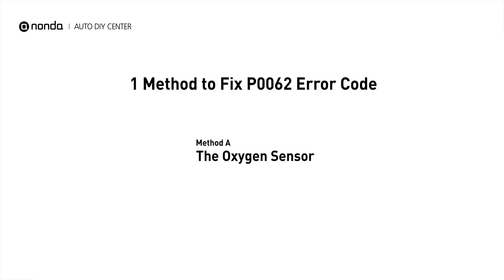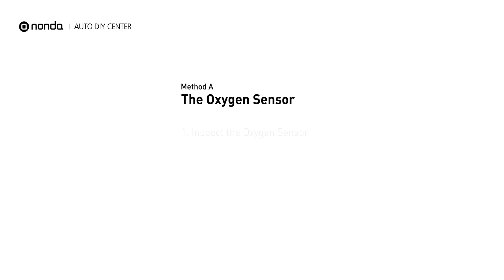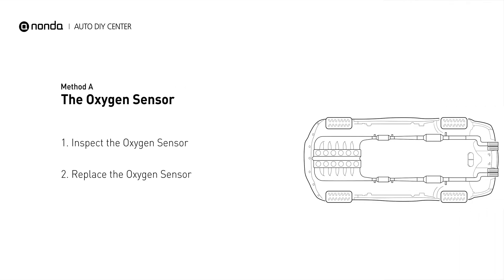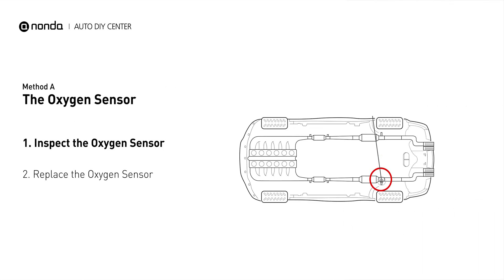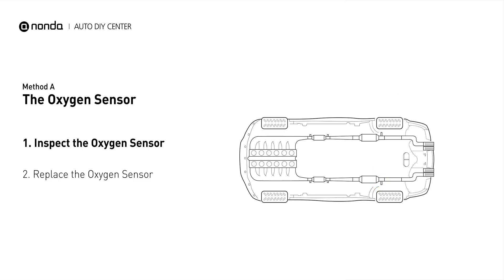Here is a simple DIY method you can try to solve this problem. Method A: the oxygen sensor. This oxygen sensor is located right after the catalytic converter. Bank 2 is on the side with the cylinder number 2. Sensor number 3 is downstream of the last catalyst in the exhaust system.